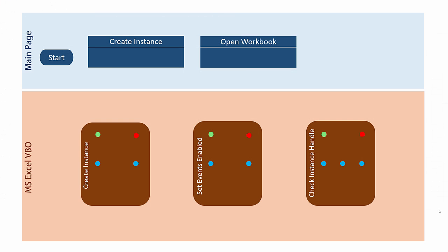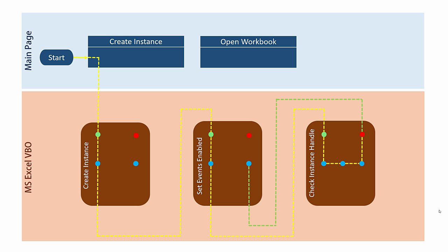Here is a diagrammatic representation of what we just saw. We have the main page of the process on the top in blue, and the Excel VBO at the bottom with the different action pages. The process first moves from start to the create instance action stage, then to the create instance action page on MS Excel VBO, then to the set events enabled action page, then to check instance handle. After completing all stages there, it goes to the end stage and automatically returns to set events enabled, then back to create instance, and finally returns to the main page.